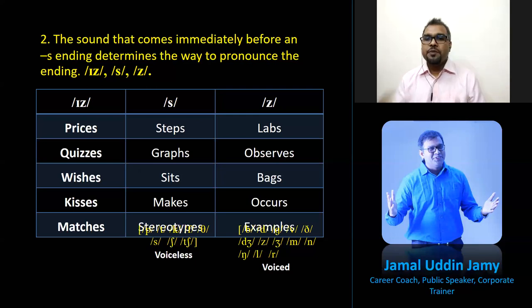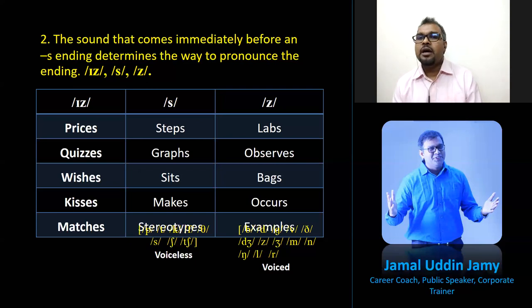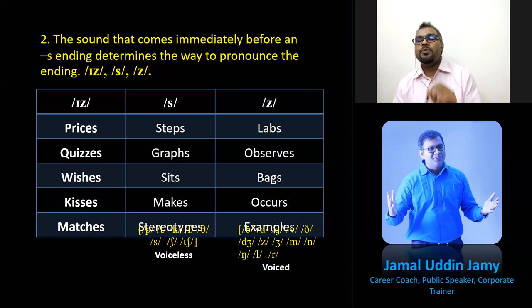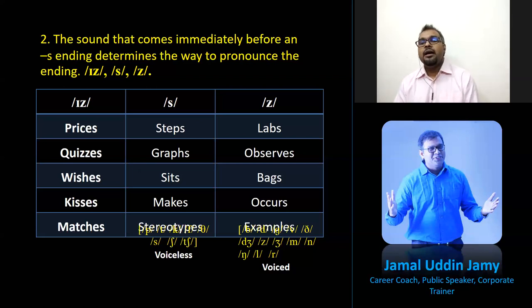Be careful: 'is' not 'is.' The next category will take the plain 's' sound: 'steps,' 'graphs,' 'seats,' 'mates,' 'labs,' 'observes,' 'bags,' 'occurs.' Even though the ending is -es or -s, the pronunciation will be just 's' — as in 'labs,' 'observes,' 'bags,' 'occurs.'